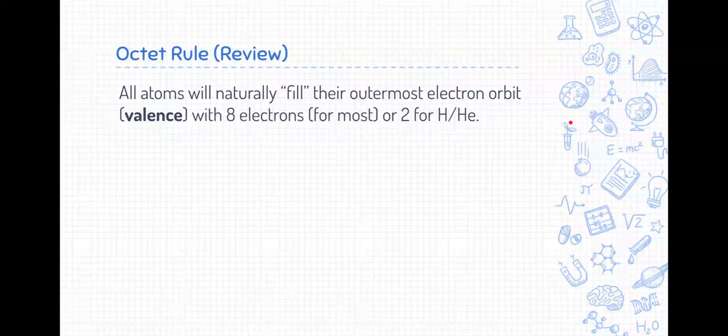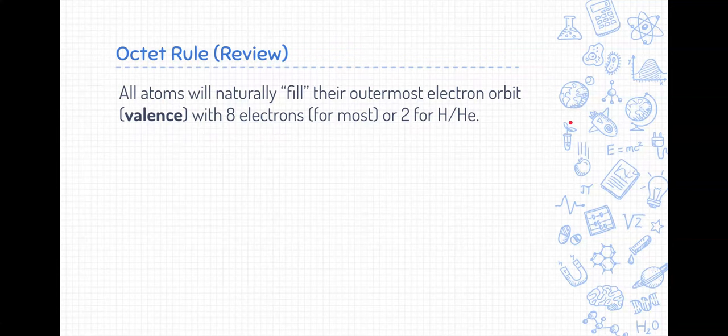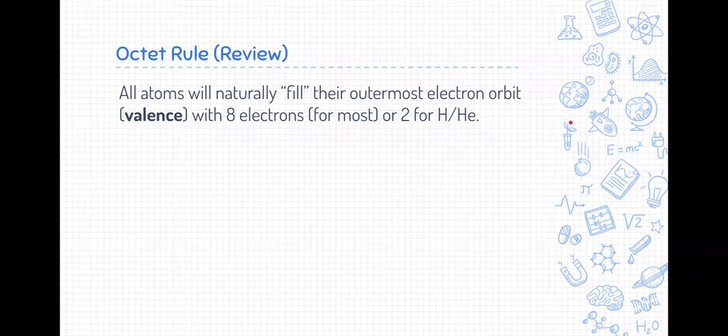Now, why do elements form compounds? Let's remind ourselves about that as well. Well, typically, elements follow what we call the octet rule. It's the tendency for atoms to naturally fill their outermost electron orbit. Those electrons on that outer shell are called valence electrons.